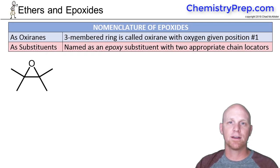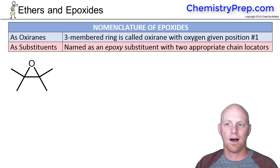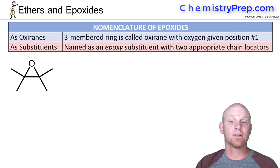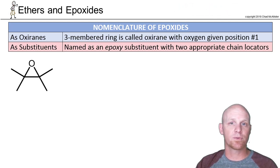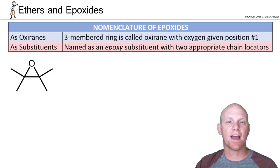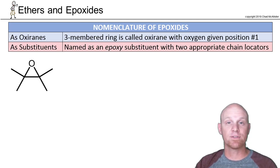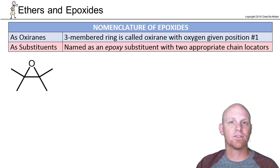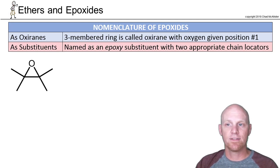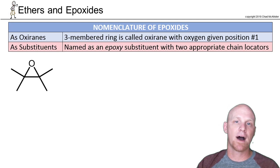Now we'll spend some time looking at epoxides. Epoxides are essentially a cyclic ether with a three-membered ring. Due to the ring strain, they're much more reactive than any other ether, and even any other cyclic ether. The ring strain gives them some properties and chemical activity that normal ethers don't have, so they get their own class and we call them epoxides.